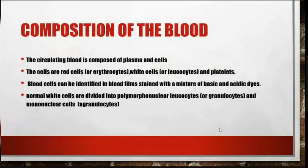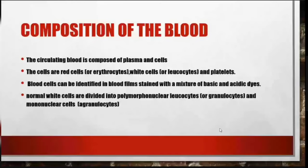The circulating blood is composed of plasma and cells. The cells are red cells, white cells, and platelets. Blood cells can be identified in blood films stained with a mixture of basic and acidic dyes. Normal white cells are divided into polymorphonuclear leukocytes and mononuclear cells, otherwise known as agranulocytes.